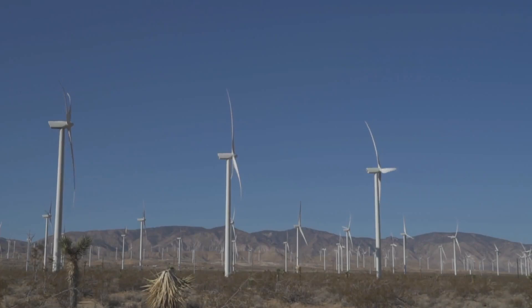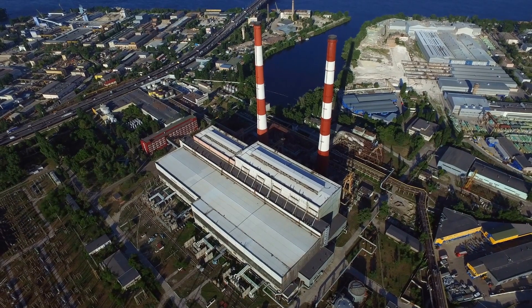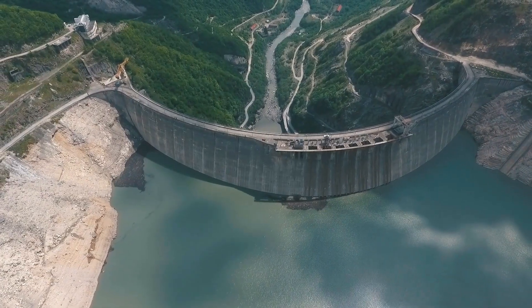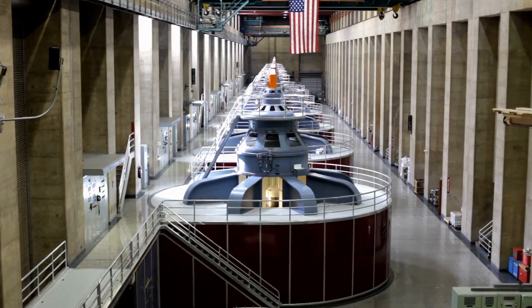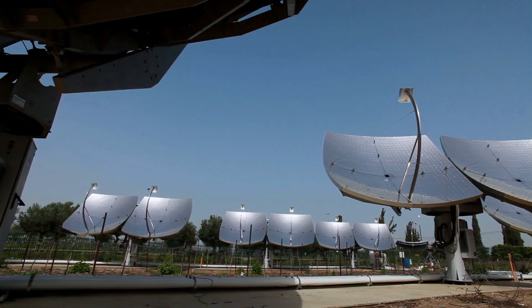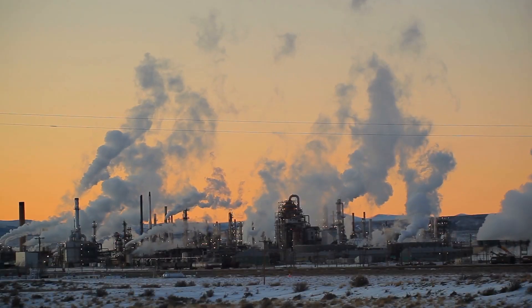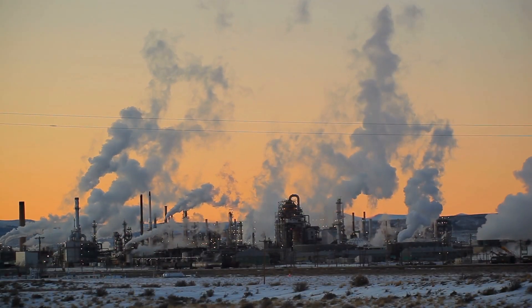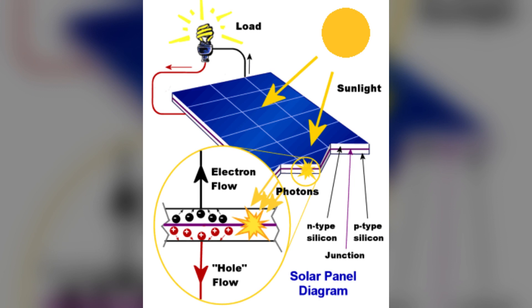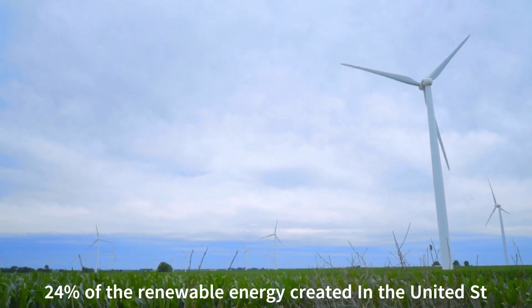There are different methods to creating renewable energy, but many of them use generators just like a typical power plant. Hydroelectric power plants use flowing water to turn the turbines of a generator, while wind turbines use wind. Some methods like geothermal or solar thermal use heat to create steam which turns a turbine, while photovoltaic cells or solar panels use sunlight to create electricity through flowing electrons.